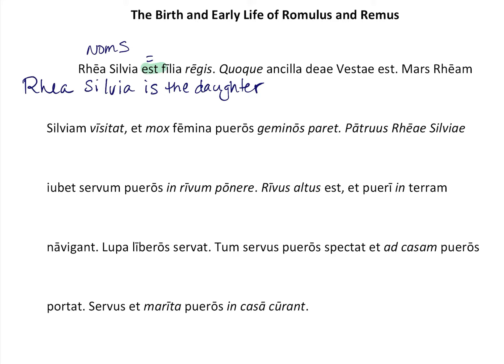'Regis' in your glossary is translated as 'of a king,' so Rhea Silvia is the daughter of a king. Then 'quoque' means 'also.' There's another 'est' here, probably talking about her as well. We have just one nominative, so our second nominative must be 'she.' She is also a maid servant.